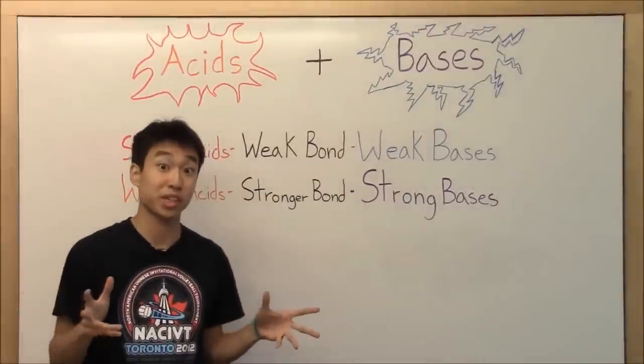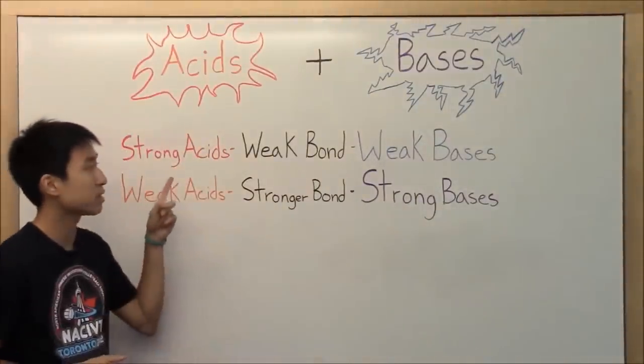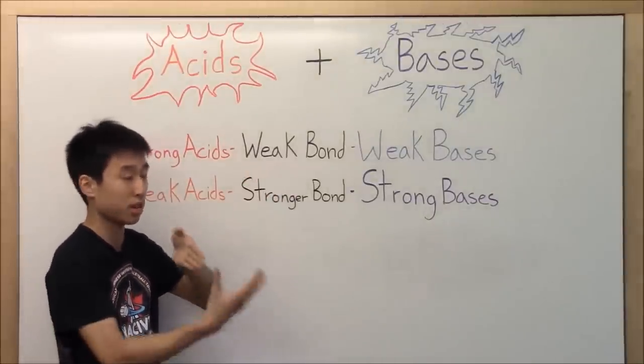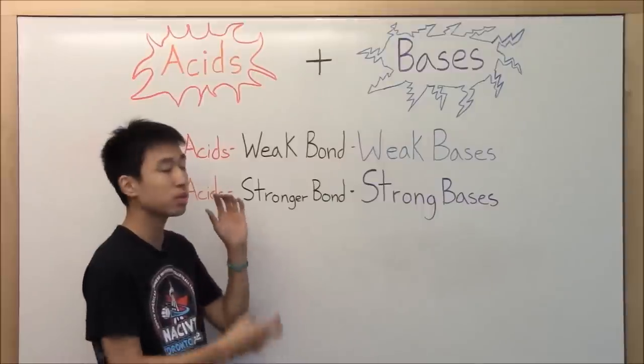Okay, so now we're going to recap real quickly. So strong acids, they lose hydrogens very easily. And they lose the hydrogen very easily because they have weak bonds with the hydrogen. And when they lose the hydrogen, they basically become a base or they go into their base form. And that's called a conjugate base.